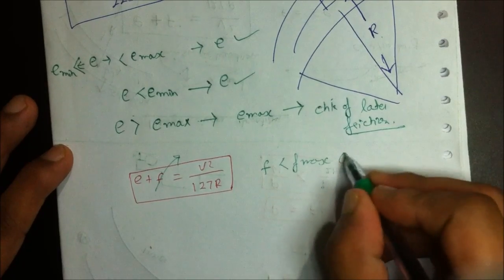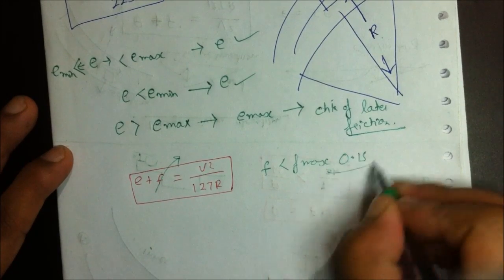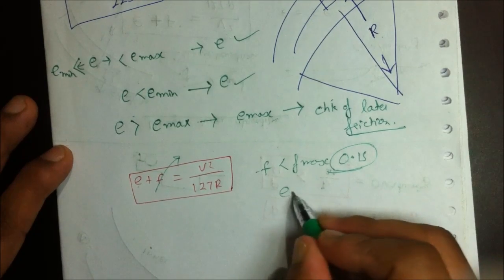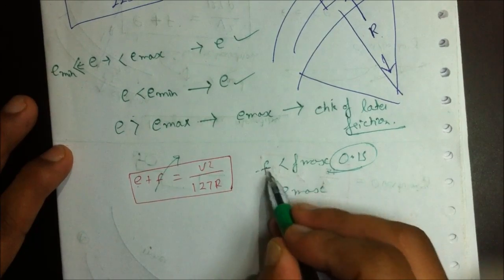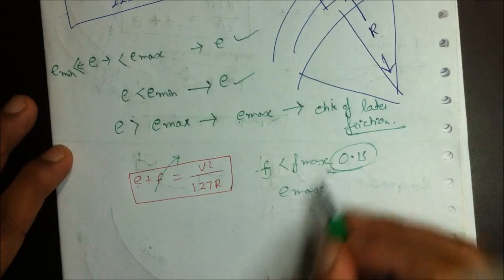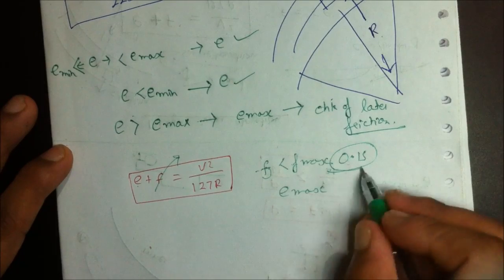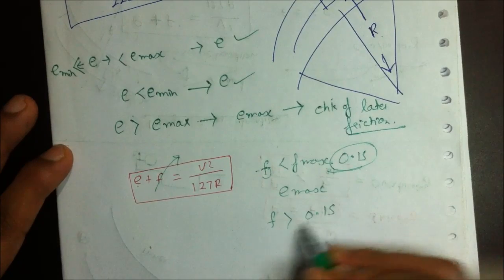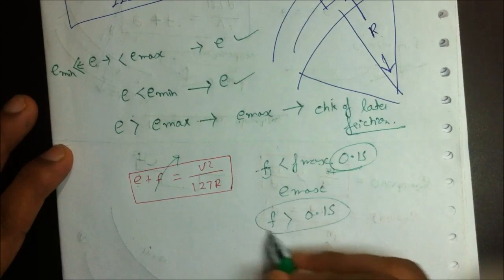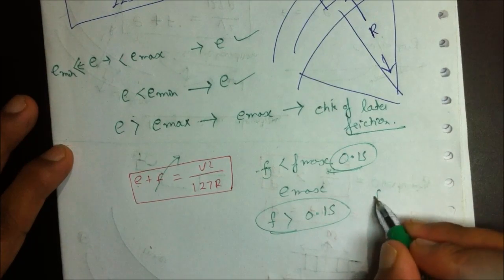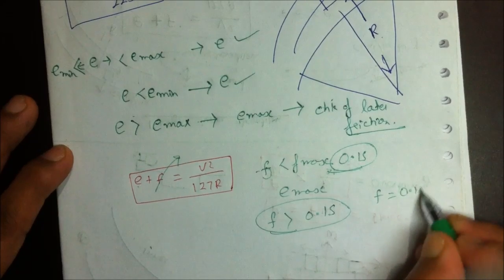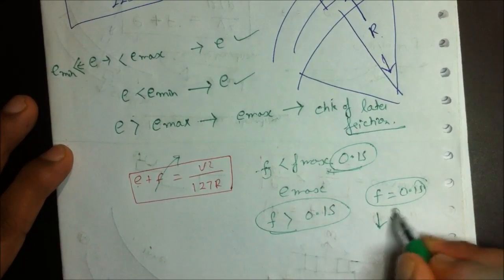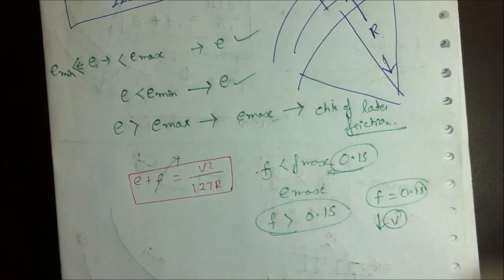If F comes out to be greater than 0.15 — that is, F exceeds the maximum lateral friction factor — we set F equal to 0.15 and reduce the velocity. We then recalculate the velocity from the same formula.